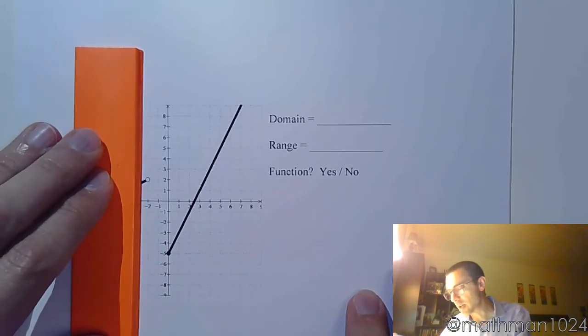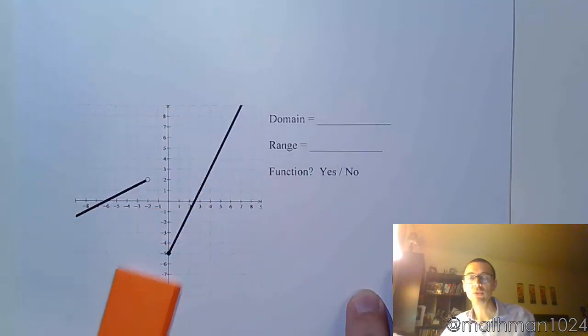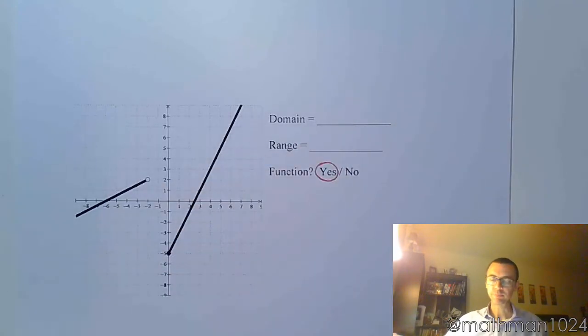it's pretty clear that this guy passes the vertical line test. As you slide along, everything's fine. There's nothing right here. But then it's still fine as you keep going up to the right. So this is a function.